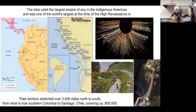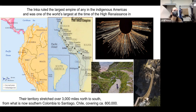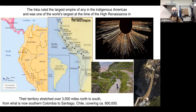Their territory stretched for about 3,000 miles on the western coast of South America, connected by a series of roads. Just like the Romans, they were able to trade goods and move armies on their road systems. They also didn't have a written language, but they could keep records using a quipu — a strange-looking thing with a series of strings and knots that had a whole coding system, kind of like braille, to denote how much commerce was moving back and forth.